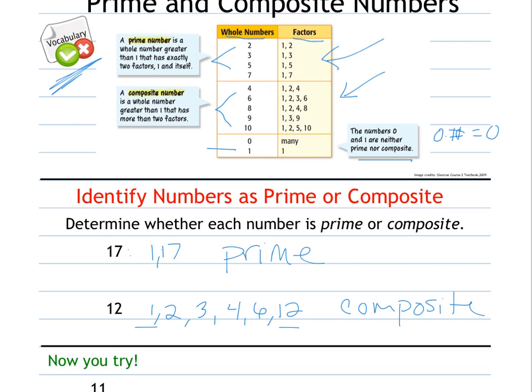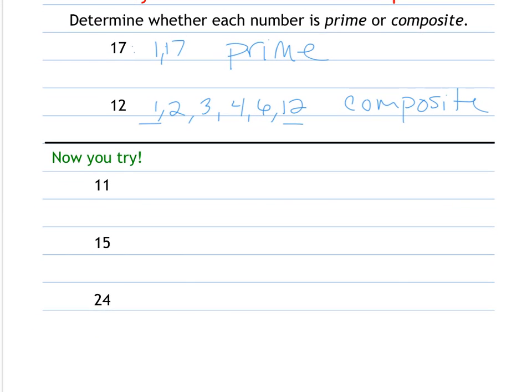You have to think of your divisibility rules. Now you try, is 11 prime or composite? Its only factors are 1 and 11, so it's prime. Factors of 15 are 1 times 15, 3 times 5, so that's composite.